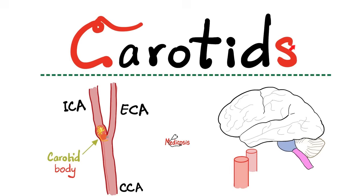This is the common carotid artery, which branches into an internal carotid artery and an external carotid artery. At the bifurcation site, there is a carotid body and a carotid sinus. The carotid body has chemoreceptors, whereas the carotid sinus has baroreceptors, both of which are under the control of the vagus nerve, or the 10th cranial nerve.